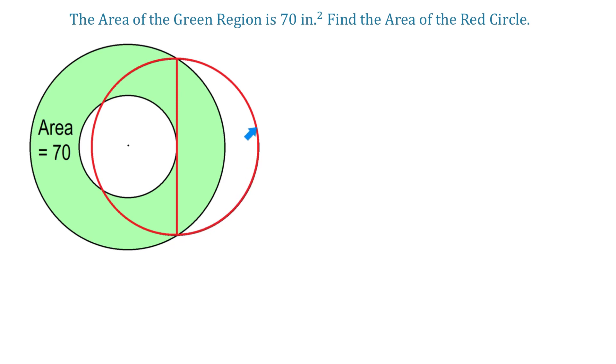Then, how can we find the area of this red circle, given the area of the green region? To find the area of a circle, we use the formula A equals pi R squared.